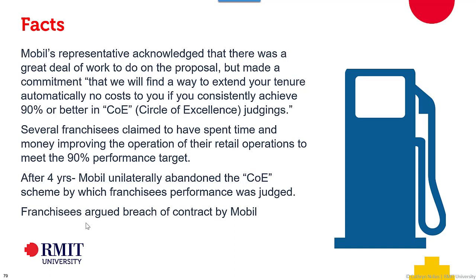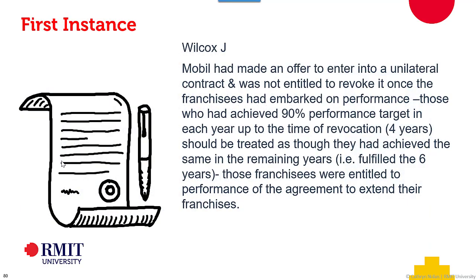Some franchisees knuckled down and started making more money, but Mobil never quite finalised the details — going backwards and forwards — and at around the four-year mark said they were pulling the program. Unsurprisingly, the franchisees who had been hitting that 90% performance target were very upset and said Mobil needed to keep that promise and hold the offer open.